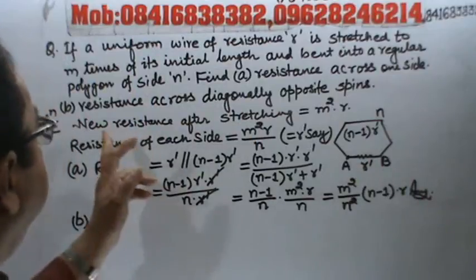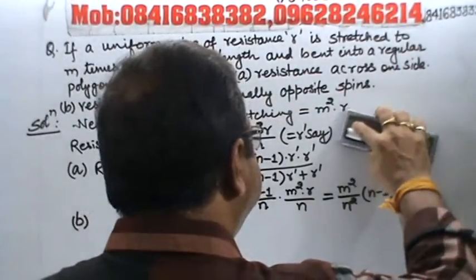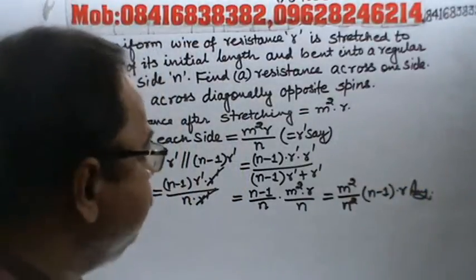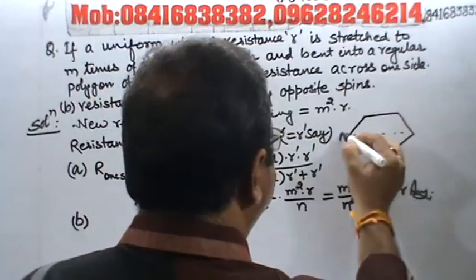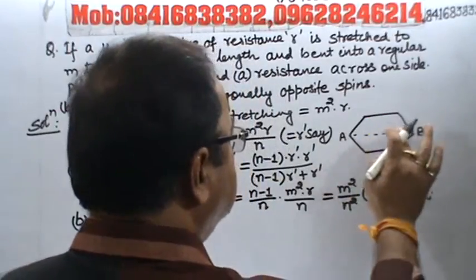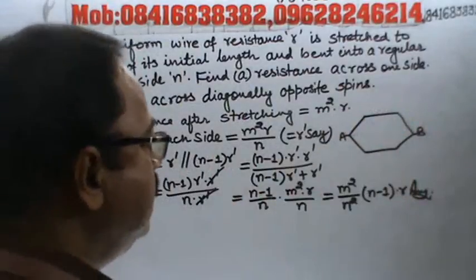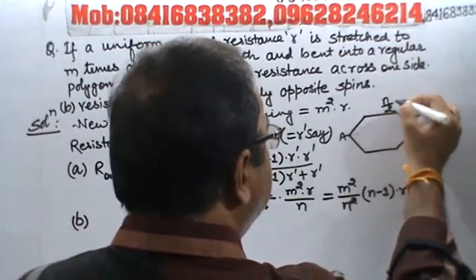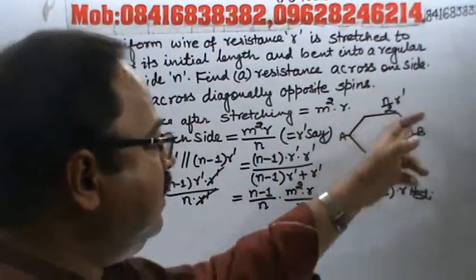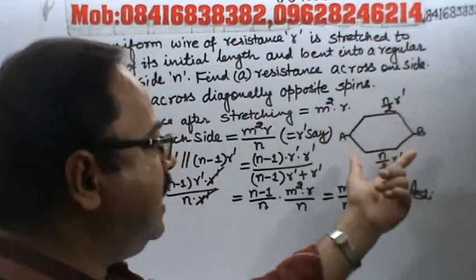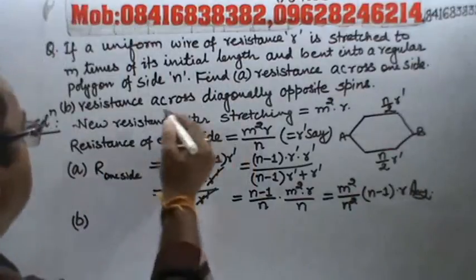Part B says resistance across diagonally opposite spins. Right? So for diagonally opposite spins, we make this figure. So suppose this is a polygon of side n and now this is diagonally opposite spin. So this point is A and this point is B. The whole resistance is divided into two parts. Since it's n sided, n by 2 parts, this becomes n by 2 r dash and below also n by 2 r dash.